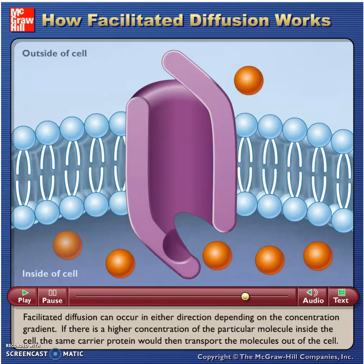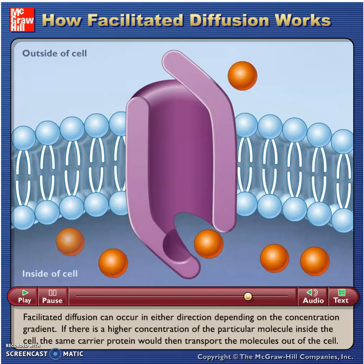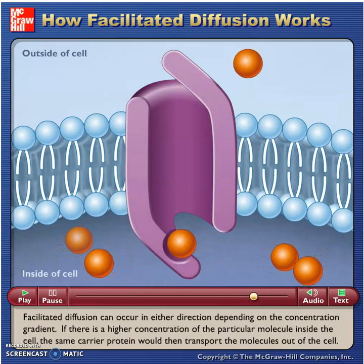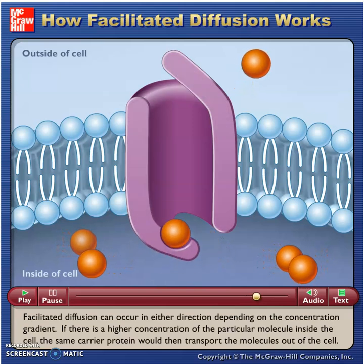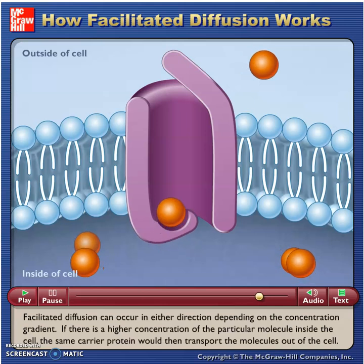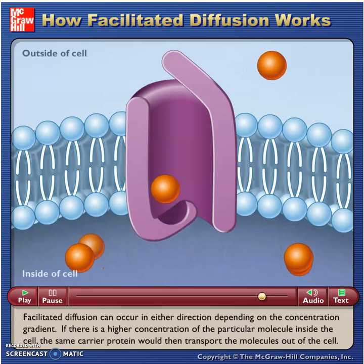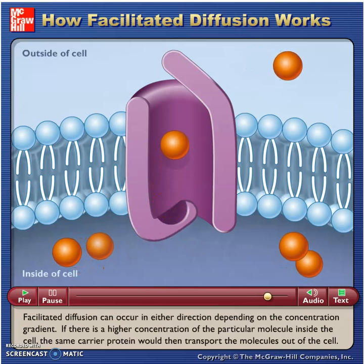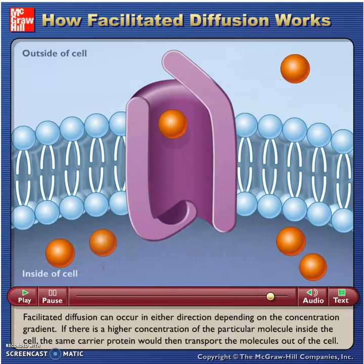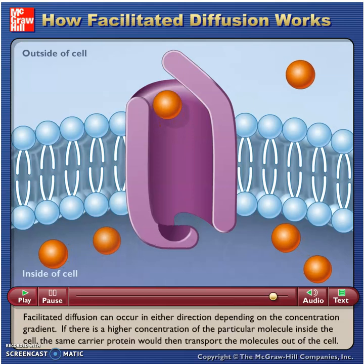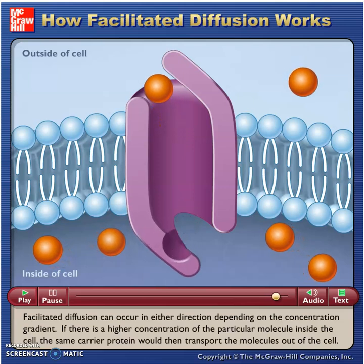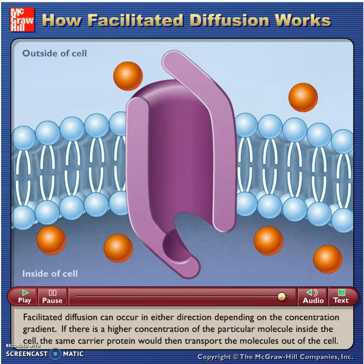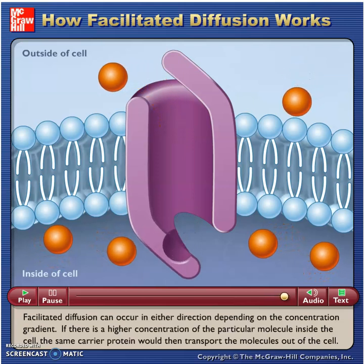Facilitated diffusion can occur in either direction depending on the concentration gradient. If there is a higher concentration of the particular molecule inside the cell, the same carrier protein would then transport the molecules out of the cell.